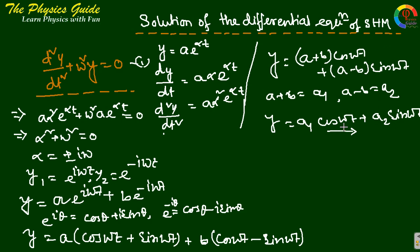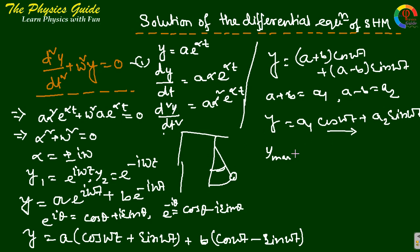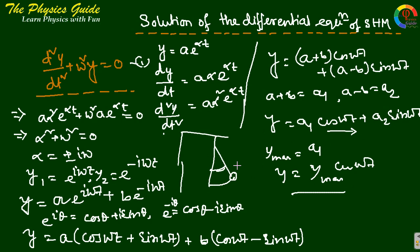For physical significance, consider a pendulum starting oscillation from the extreme point — the point of maximum displacement. At t = 0, y = y_max. Applying initial conditions gives a₁ = y_max and a₂ = 0, so y = y_max·cos(ωt).